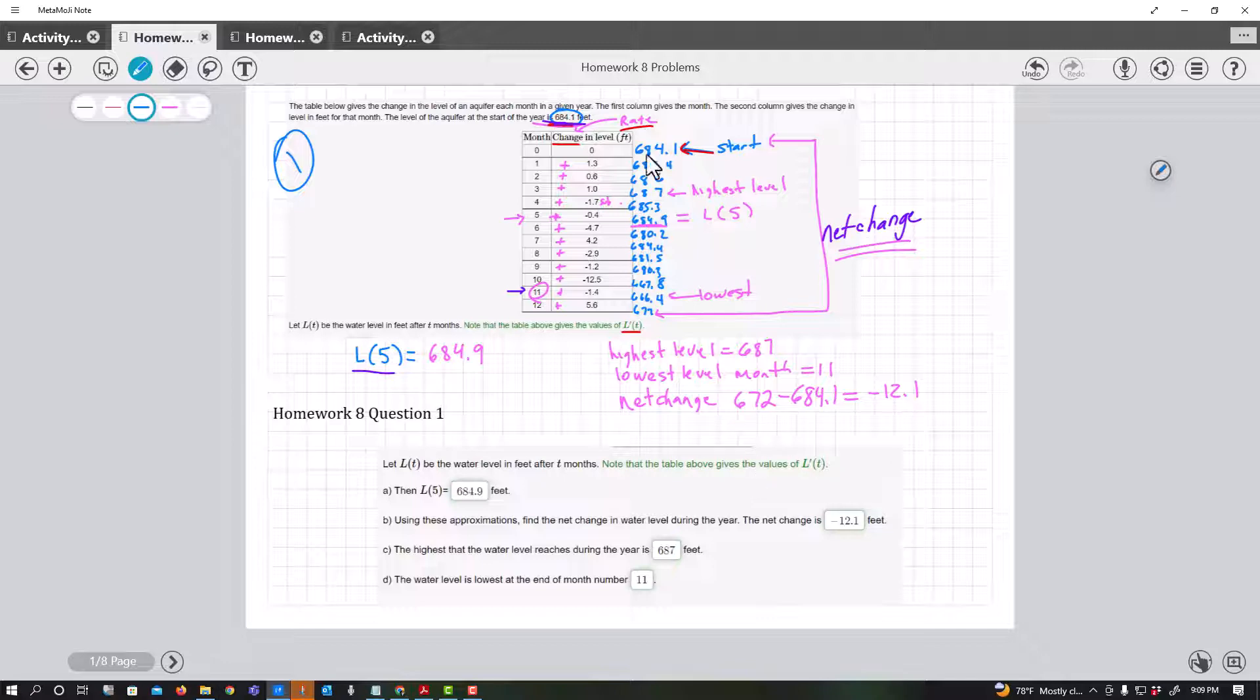As you can see, what I do first is I just fill in the table. So I started at 684.1, then I added 1.3, added 0.6, added one, subtracted anything that's negative, and I fill the table out. Then it asked me for this L of 5. Well, I just simply look to see where I'm at month 5, that value there.